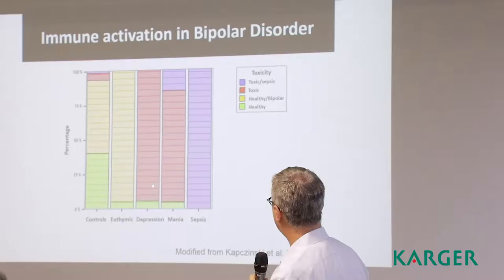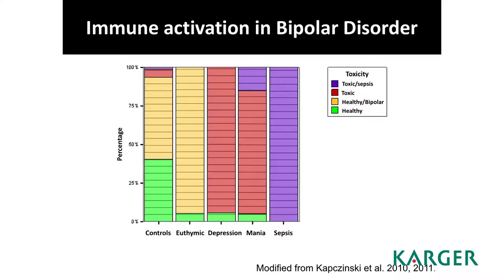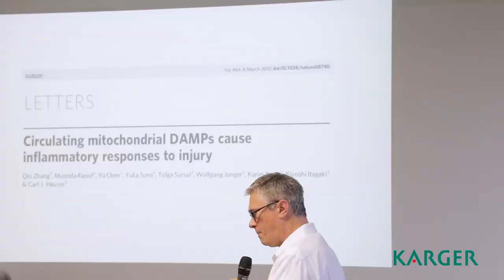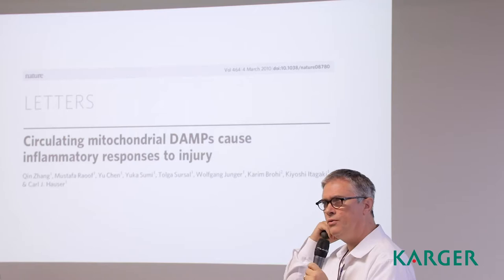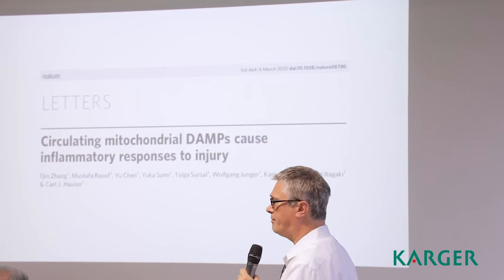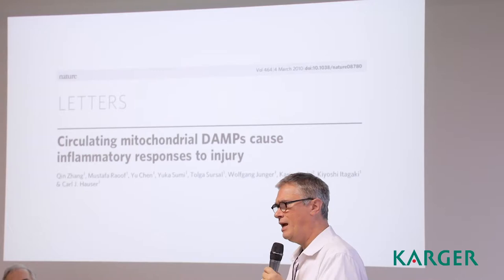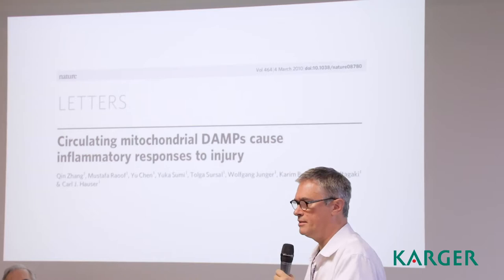We even put in a control of immune activation — sepsis — just to show that this was really something measurable. What we were saying was that there is something going on, this type of toxicity, if you will. They are more related to episodes, so having more episodes is activating more of these routes. The type of toxicity we find in depression and mania is very different from the ones we find in euthymia and in controls. And some patients with mania have toxicity at the same level as patients with sepsis.